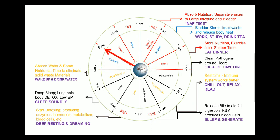Between 7 am to 9 am is the period of the stomach, which is involved in digestion and absorption. This is the right time to take breakfast. You should mainly prefer eating fruits, low-calorie carbohydrates, healthy fats, and some multivitamins — additions that are helpful for the development and growth of the body.